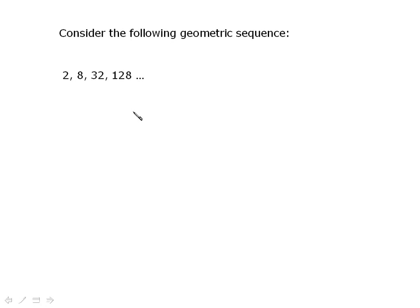2, 8, 32, 128. Pretty standard looking geometric sequence. We have an A value of 2, common ratio of 4.